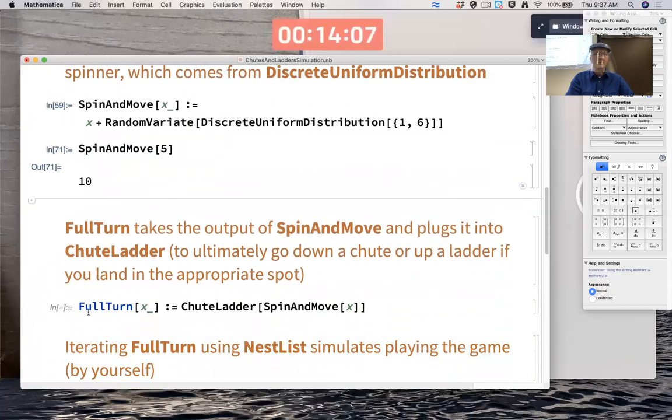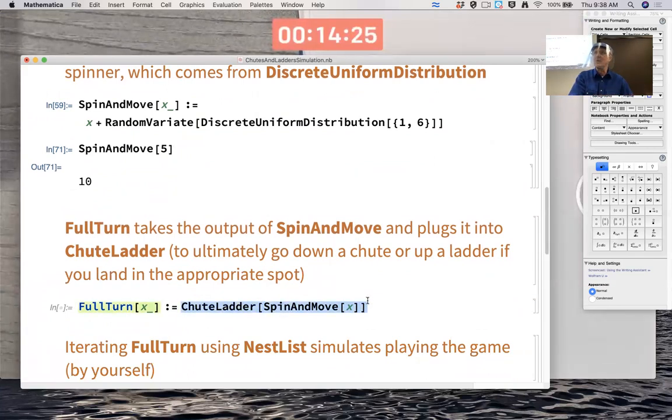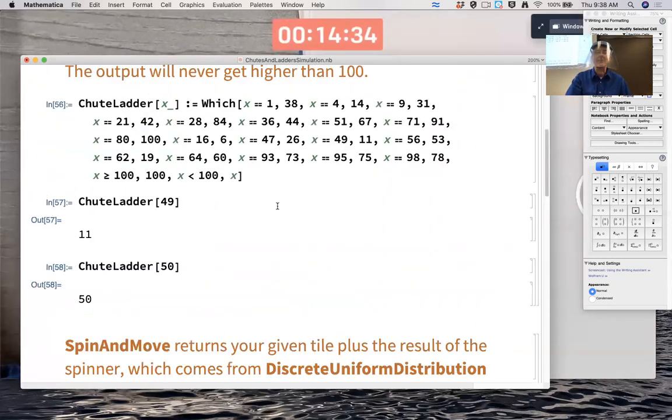FullTurn combines the two. So I'm at location x. First, I'm going to spin and move. I'm assuming I've already done the output of a chute or a ladder, and I'm now at location x. I'm going to spin and move first, and then plug it into ChuteLadder. If the output of SpinAndMove is at a spot where there's a chute or a ladder, then you apply the chute or ladder and you move. If it's not, then you stay where you were, right? That's why I have the output be x.